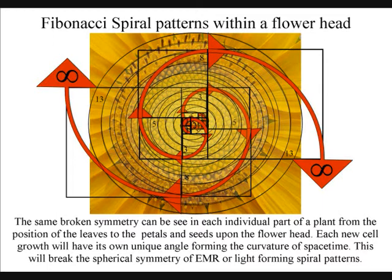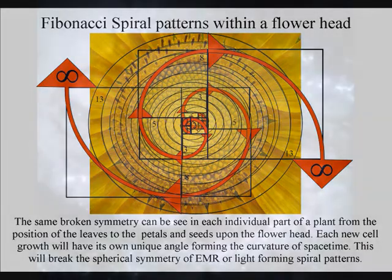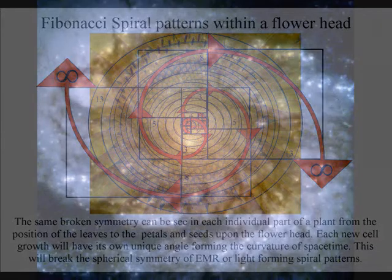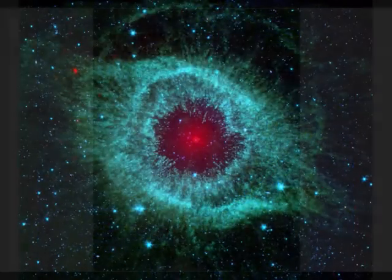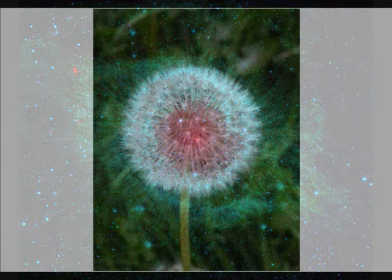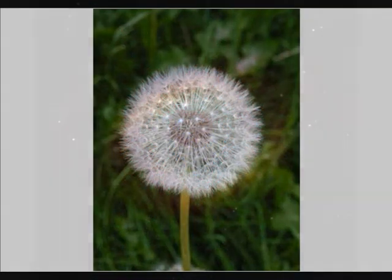Each new cell growth will have its own unique angle, forming the curvature of space-time. Therefore we see the same patterns in plant life as we do in deep space, formed by the same universal geometry. It is this dynamic universal geometry that human mathematics is based upon.